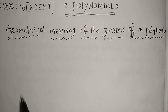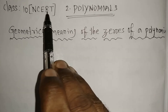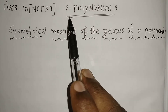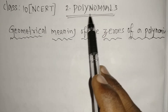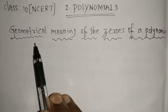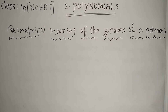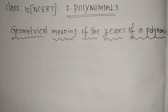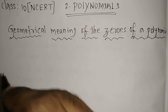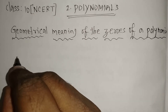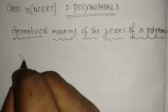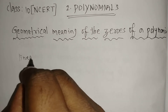Welcome to my channel. Today we will see Class 10 NCERT Chapter 2 Polynomials - the geometrical meaning of zeros of a polynomial. Based on that, we are going to start, and first I'm going to take a linear polynomial.